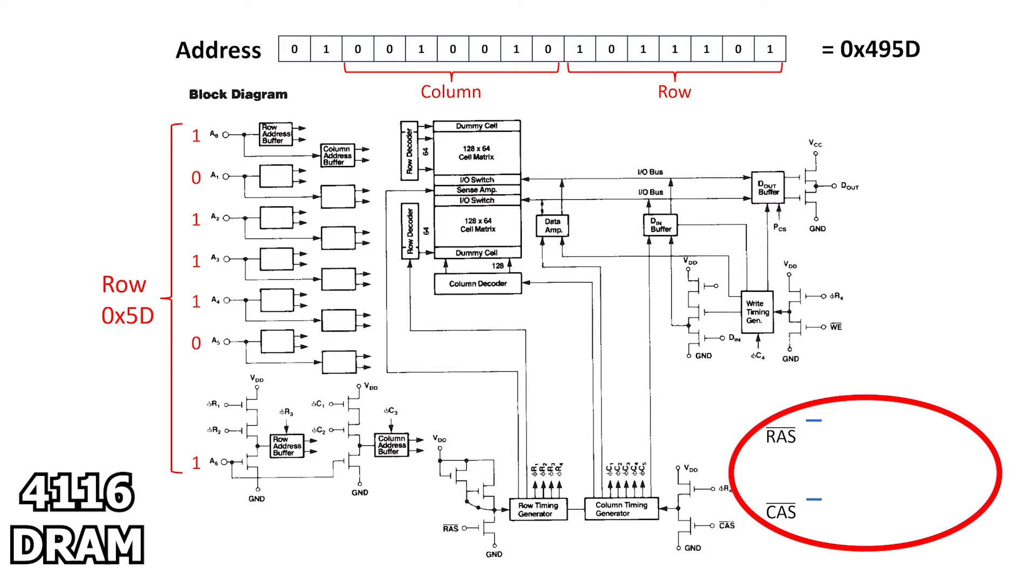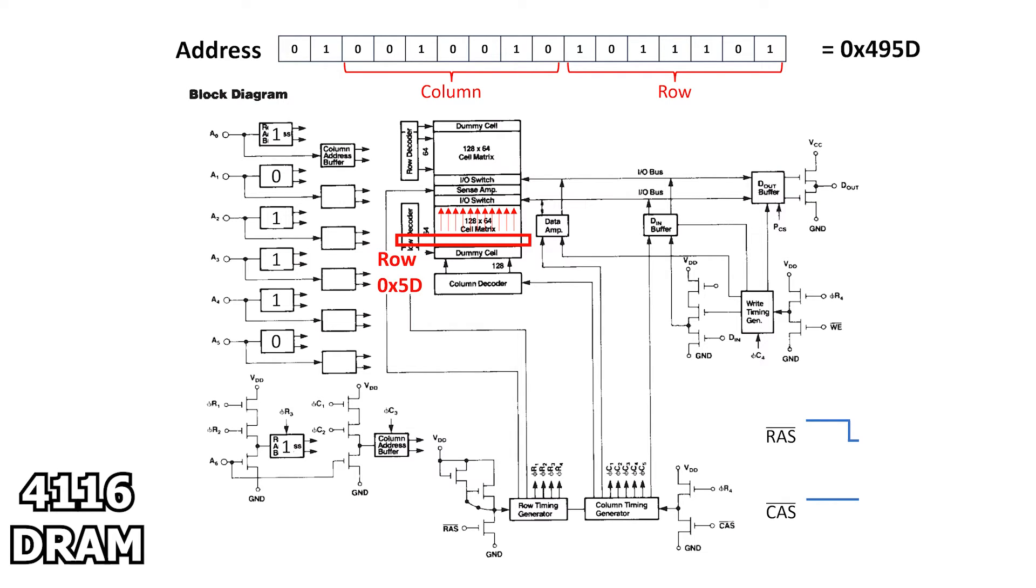Next, the row address strobe or RAS signal is asserted, and this latches the value on the 7 external address pins into the row address buffer. Next, the row decoder selects column 93, which is 5D in hexadecimal, and all 128 memory cells in that row discharge their capacitor into a 128-bit internal bus.